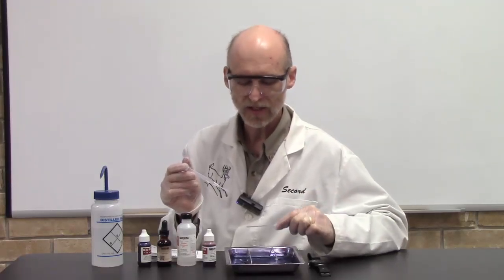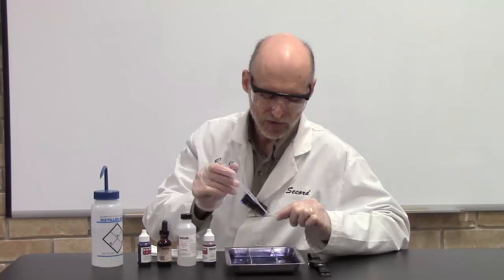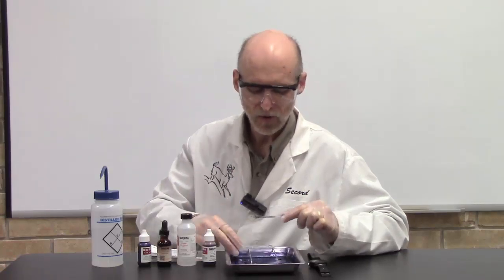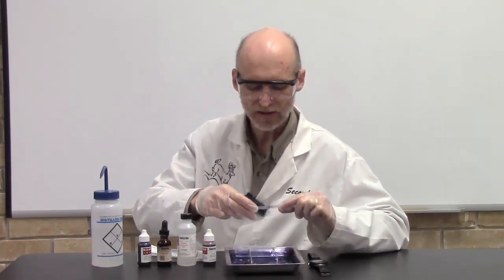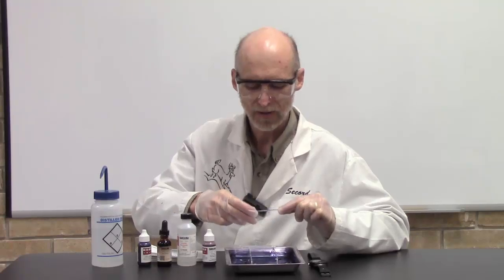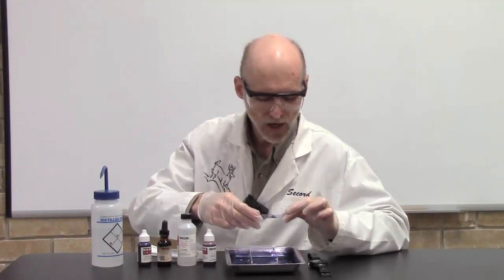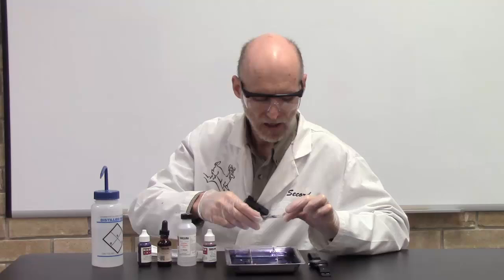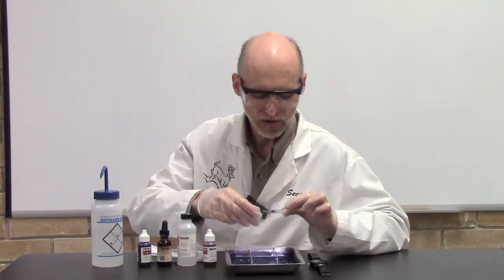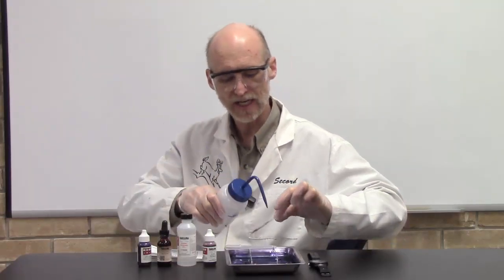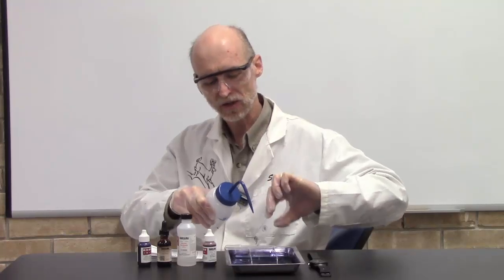This is where we're going to decolorize the thin cell walled bacteria but not the thick cell wall. We need to leave it on for just the right time. Put a couple drops on your bacterial smear and rock it back and forth. You'll actually see the stain coming out. Really watch your clock to make sure you leave it on for exactly 12 seconds, and then immediately rinse it off.